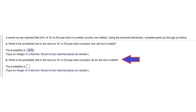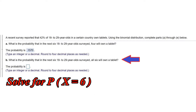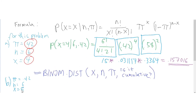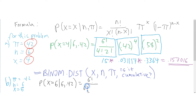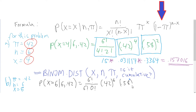Now let's move on to part B. What is the probability that in the next six 18 to 29 year olds surveyed, all six will own a tablet? This is the same setup as part A, but now X equals 6 since all six are successes. By hand, the formula gives us 6 factorial over 6 factorial times 0 factorial, times 0.42 to the 6th power, times 0.58 to the power of 6 minus 6, which is 0.